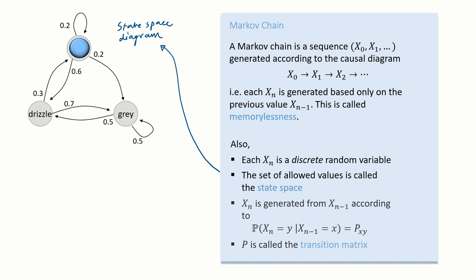We'll assume that at every time step, the rule for generating the next value is exactly the same, and it's a random choice controlled by this matrix P called the transition matrix. Now all of these assumptions here can be relaxed.